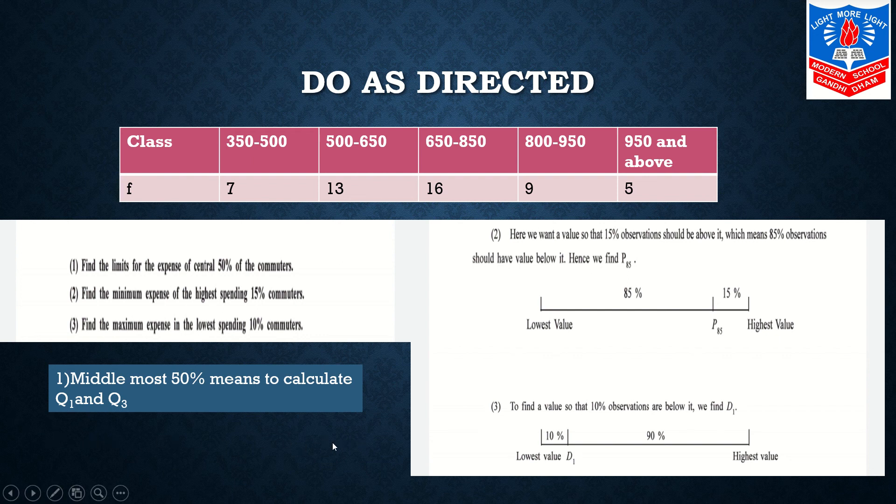The second question is find the minimum expense of highest spending 15% commuters. Here we want a value so that 15% of the observations should be above it, which means 85% of the observations should have value below it. Hence we find P85. Here we want a value so that 15% of the observations should be above it, which means the highest value 15%. So remaining is 85%, 100 minus 15 you will get 85. So we will be calculating P85.